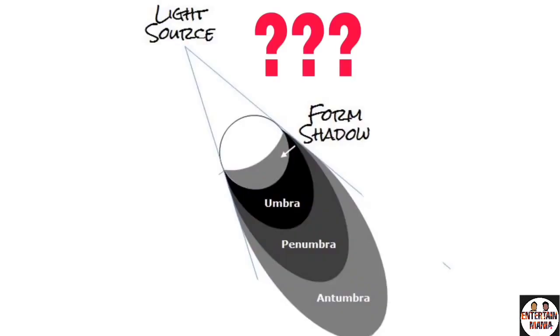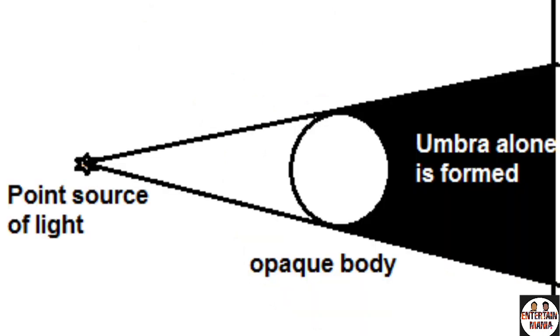First let's learn some basics. When light comes from a point source of light, then the shadow casted has only one region called umbra.